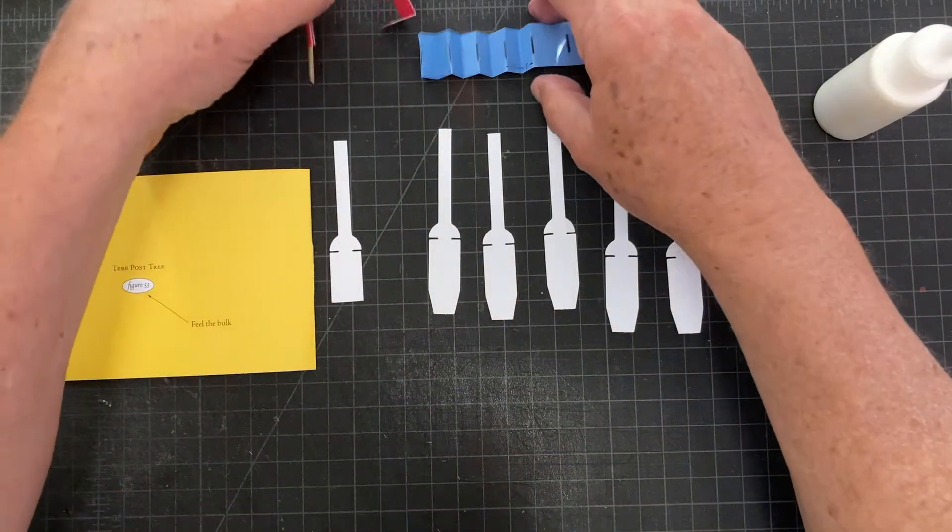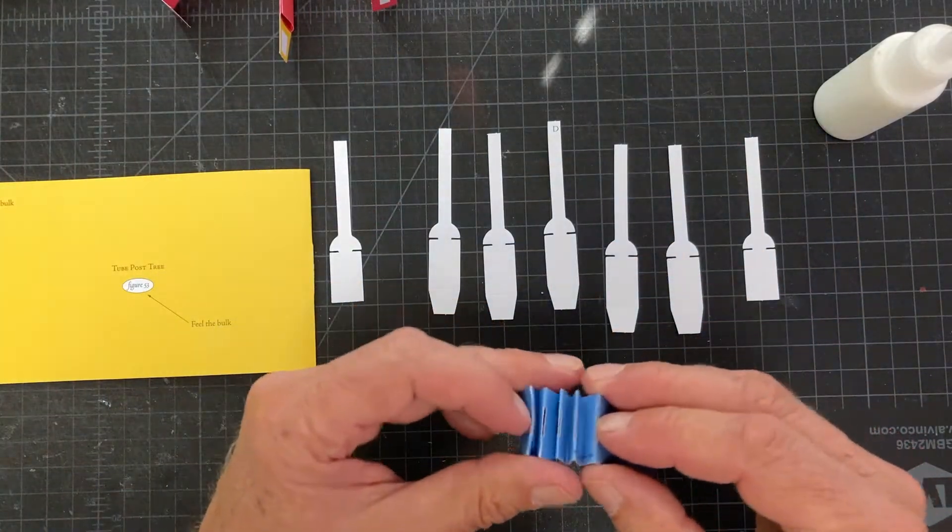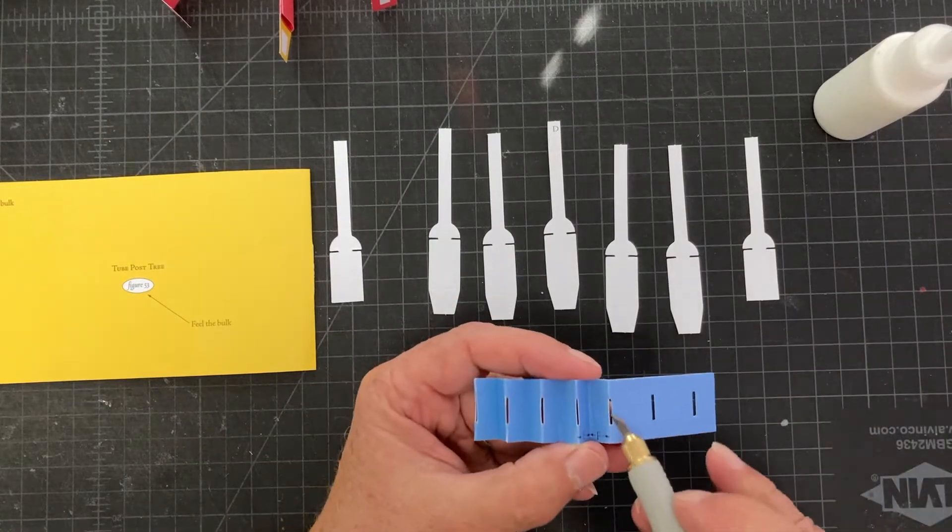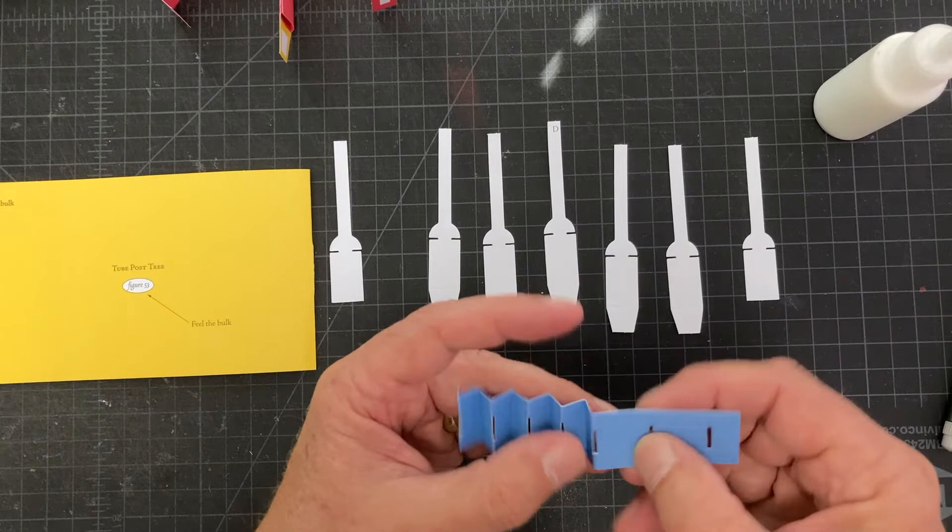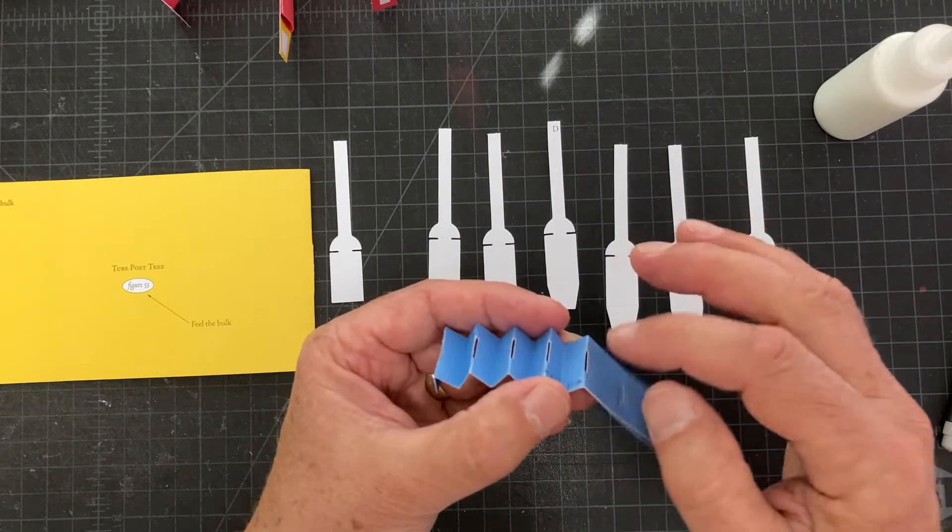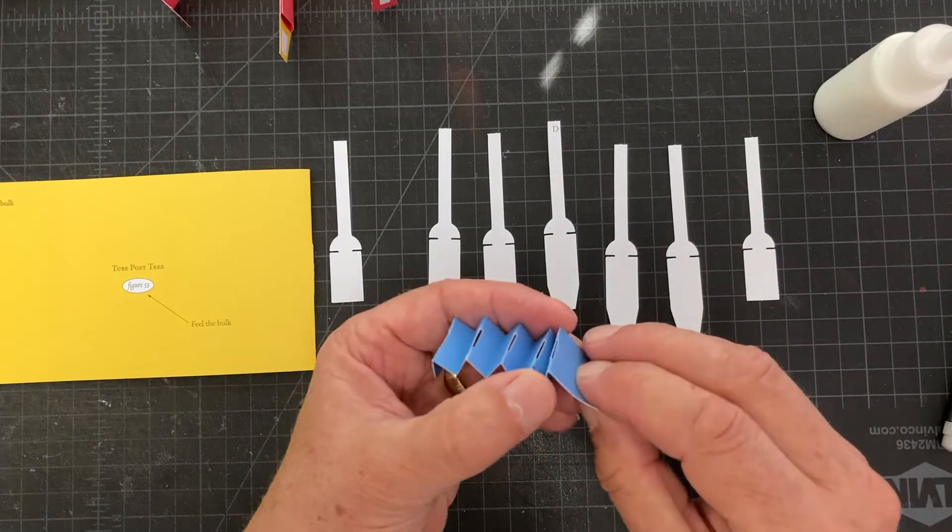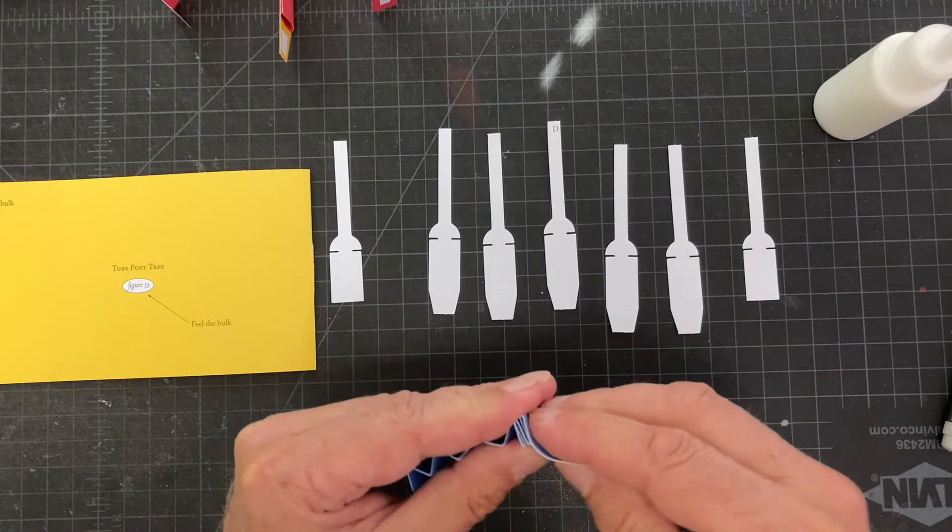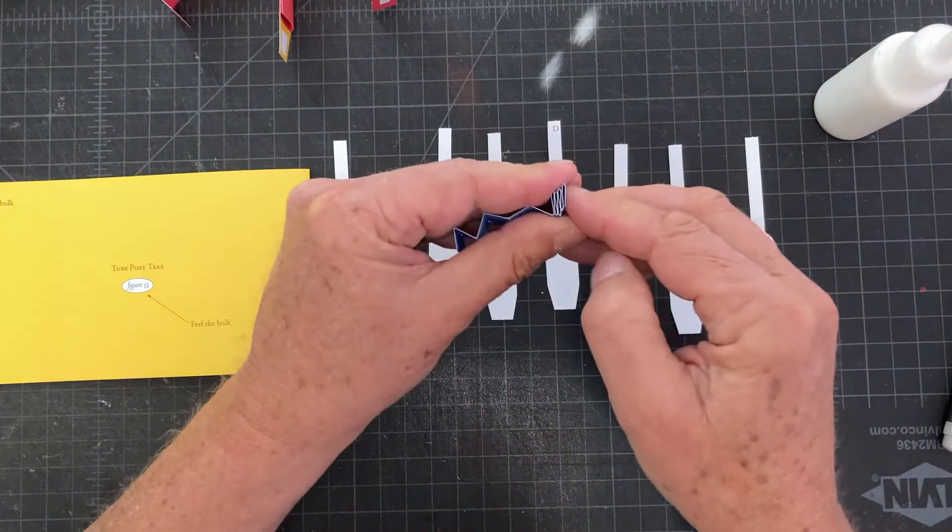All right, and now we have this accordion folded piece. You'll see that I've cleaned out the die cuts here. They had little pieces of paper in there, so fold it so that the die cut is at the top, the top of the mountain—the mountain fold, the valley fold, mountain fold, valley fold, mountain fold.